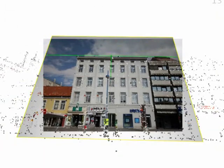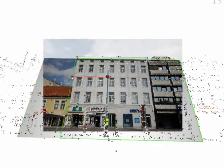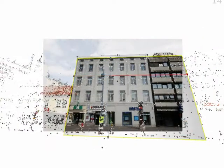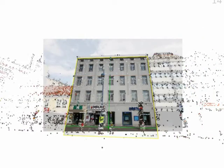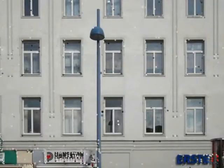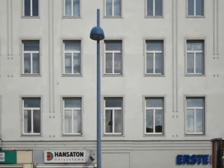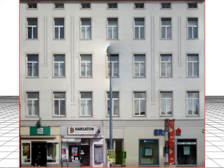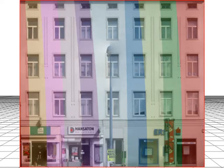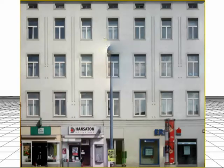In order to specify the facade extent we introduce user interaction, which allows for easy adjustment of the boundaries. Now we compose the facade image by sampling color values from optimal shots. Here each color indicates a different shot considered as optimal for the particular region.